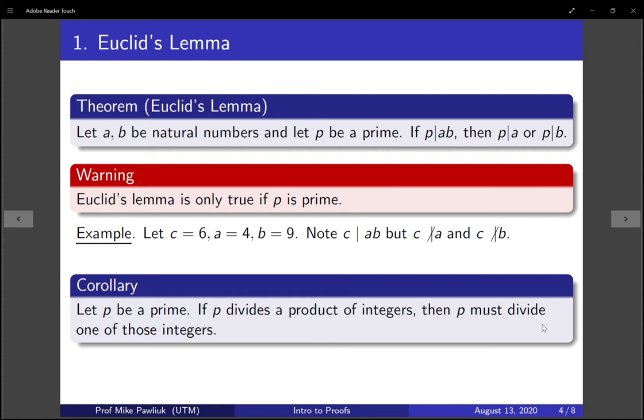An important corollary of Euclid's Lemma is that if p is a prime and p divides a product of integers, possibly 100 integers or something, then p must divide one of the factors. The proof of this is by using induction and Euclid's Lemma.